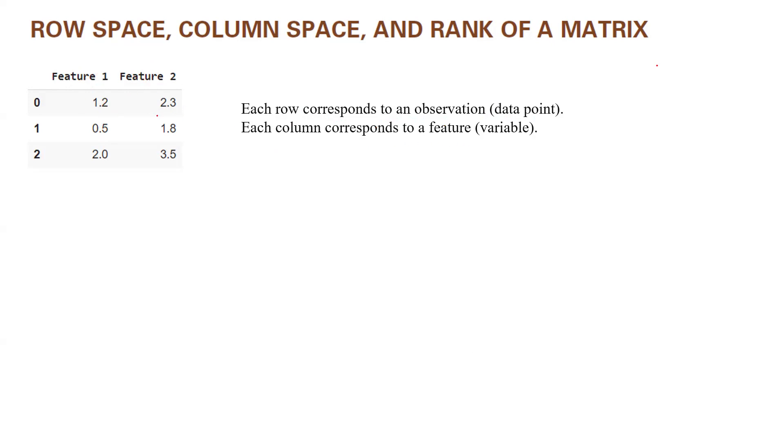So basically here you have one, two, three rows, and you have two columns. Please note that these are just indices. We start with index 0.